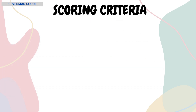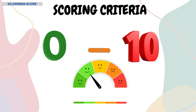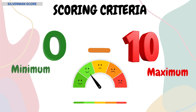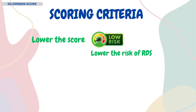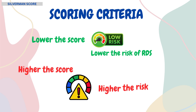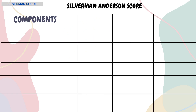Now let's move on to the scoring criteria. The Silverman Anderson score ranges between 0 to 10, with 0 being the minimum and 10 being the maximum score. We need to keep in mind that the lower the score, the lower the risk of RDS, whereas a higher score indicates a greater risk of respiratory distress. For every component, a score of 0, 1, or 2 will be given.